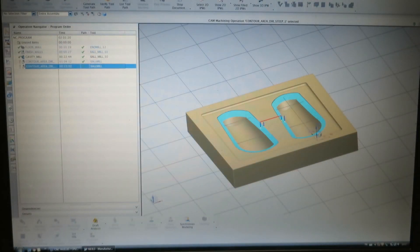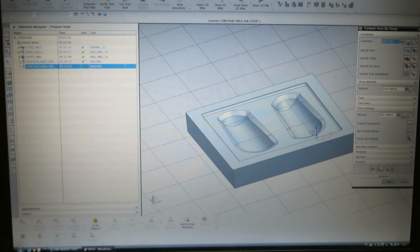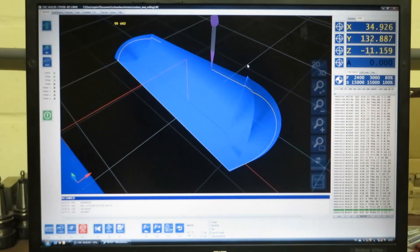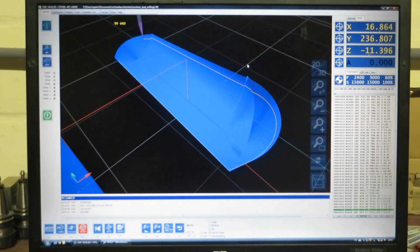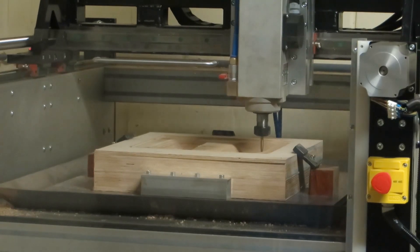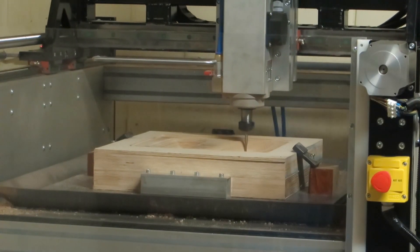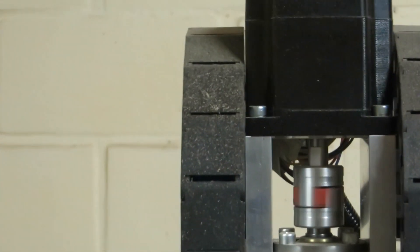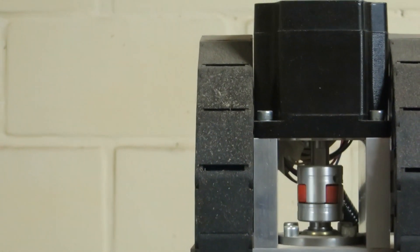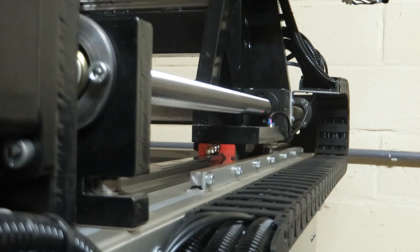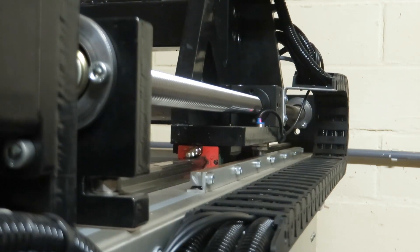He's running again through the software program. A lot of you might think CNC milling is just an easy, cheap, and fast way to create stuff, but a lot of engineering and programming goes into this, so don't underestimate this step. These are some beauty shots of the machine he made. He built it from scratch, you can see a video in the description down below.